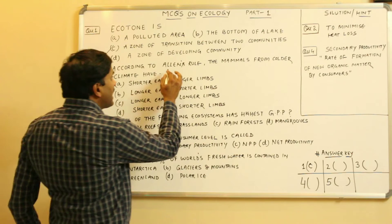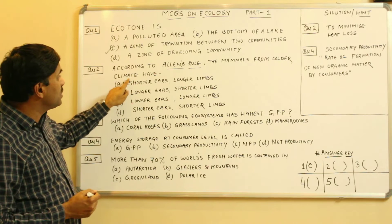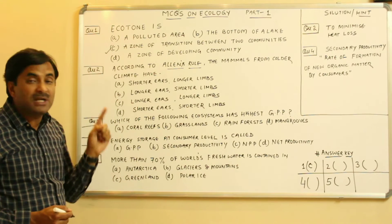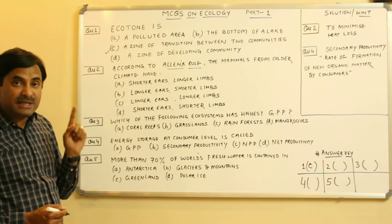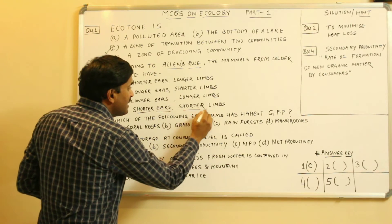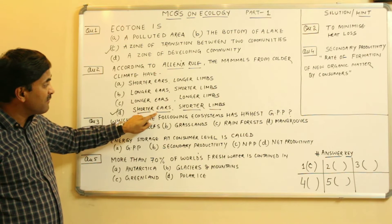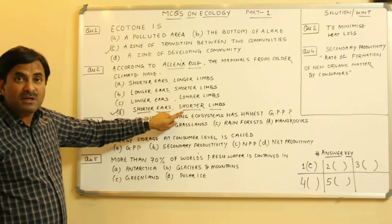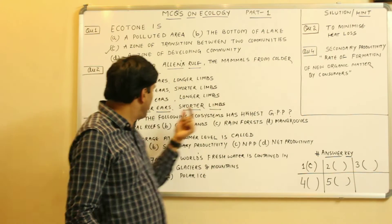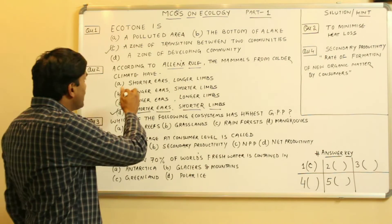According to Allen's rule, mammals from colder climates have shorter ears and shorter limbs. Always remember: shorter ears and shorter limbs. The significance of this is that it helps them minimize heat loss.